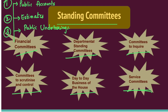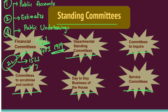Financial committees are further classified into the Public Accounts Committee, Estimates Committee, and Public Undertakings Committee. The Public Accounts Committee was set up in the year 1921 under the provisions of the Government of India Act, 1919. At present there are 22 members — 15 from Lok Sabha and 7 from Rajya Sabha. Members are elected by parliament every year according to the principle of proportional representation by means of single transferable vote. The term of office of a member in the Public Accounts Committee is one year.